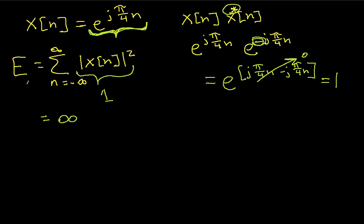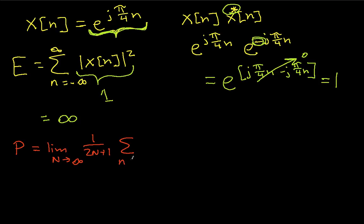So this is not an energy signal because the energy is infinite. Because the energy is infinite, we might think this is a power signal, so let's check that out. The average power is the limit as capital N approaches infinity of 1 over 2N plus 1, times the summation of n going from minus capital N to capital N of the magnitude squared of x(n).